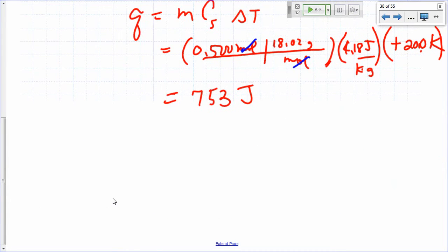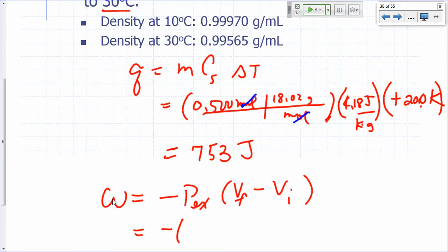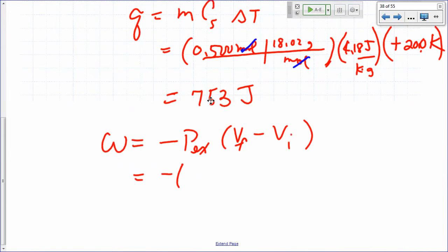How about the work involved here? Work is minus P external times V final minus V initial. What's our external pressure? One atmosphere.